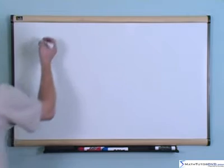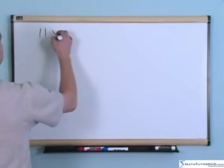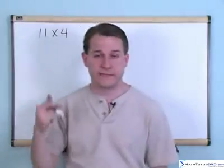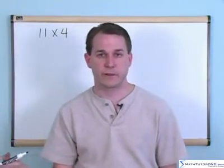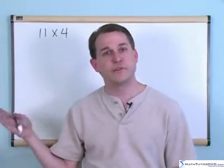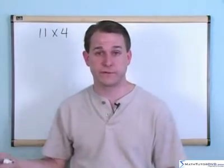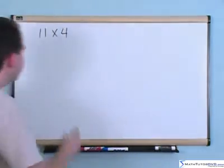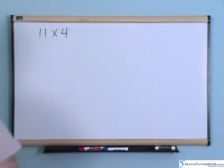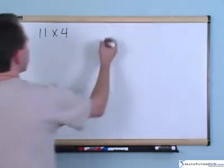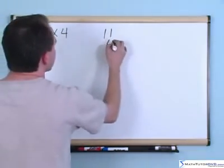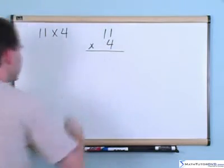Now let's move into some more challenging problems: 11 times 4. Some people — many people — memorize the 11 and 12 times tables, and that's fine. You can just remember that 11 times 4 gives you 44. I know that because I just remember it from when I was little. But I'm going to teach you how to do this without having to remember it. What you're going to do is write the bigger number on the top, just like we always do, and the smaller number on the bottom.